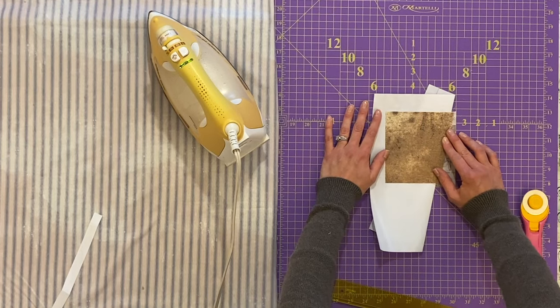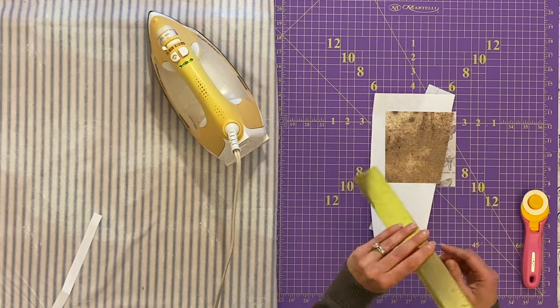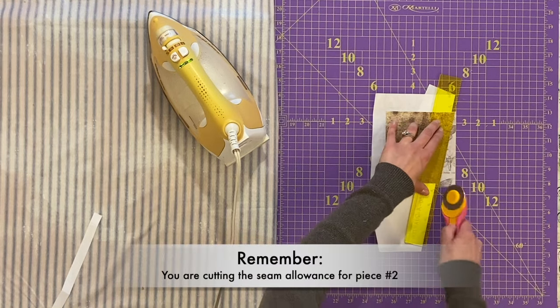A good way to remember what the order of operations is is first you cut that first seam allowance and now you're going to cut along the same raw edge to get the second seam allowance.